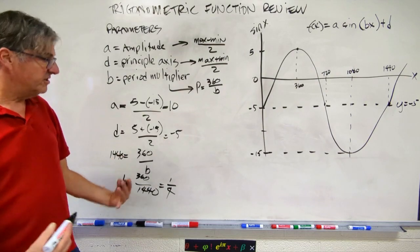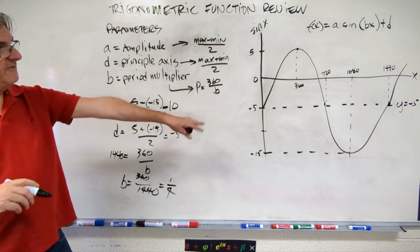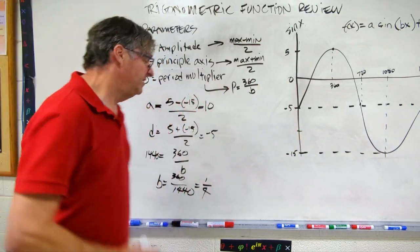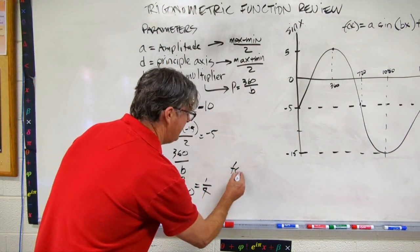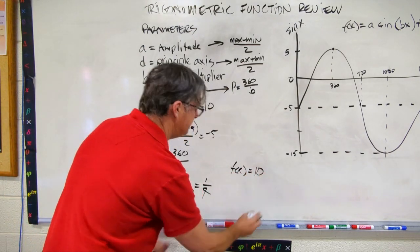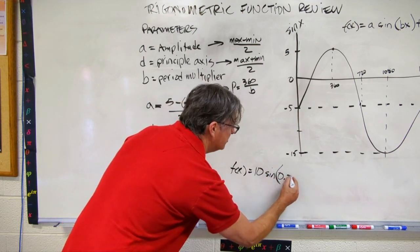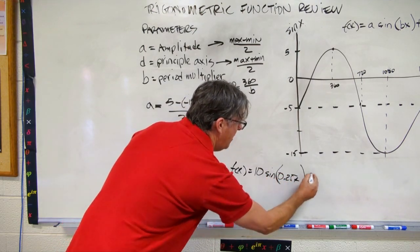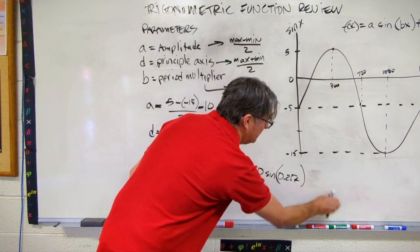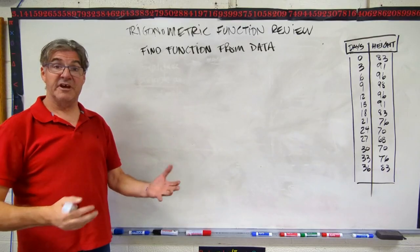So we're going to divide. b is going to equal 360 over 1440. And guess what? That is going to be one quarter. So our function, because often, basically this whole exercise is to write the function for this graph. So we're going to get f of x equals our a, 10 times sine of 0.25x plus... it's actually minus 5 because our principal axis is below the x-axis. And there's our function.